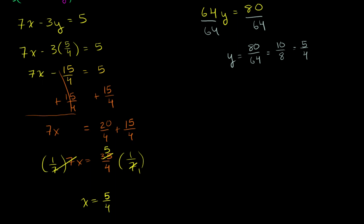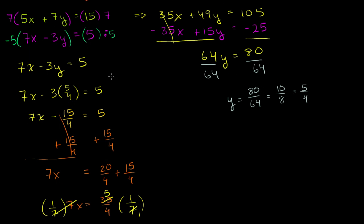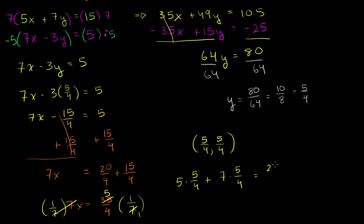So the point of intersection is (5/4, 5/4) — both x and y equal 5/4. We can verify in the top equation: 5 times 5/4 plus 7 times 5/4 equals 25/4 plus 35/4 equals 60/4, which equals 15. That checks out. You can verify the bottom equation yourself, but it should work since we used it to find x equals 5/4.